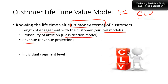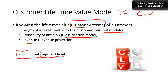The revenue model asks: how much money are you going to make from a customer given a certain engagement? Once you know the period of engagement and what products are involved, you calculate the revenue. This can be done for an individual customer and also for a segment. That's the core motivation of the CLV model.